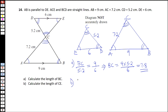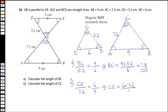For part two, finding CE: taking the ratios of corresponding sides, CE over 7.2 equals ED which is 6 over AB which is 9. So CE equals 6 multiplied by 7.2 over 9, which equals 4.8. That's how you work out number 14.